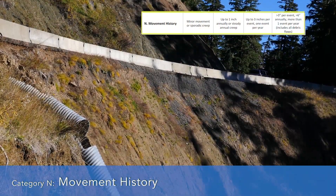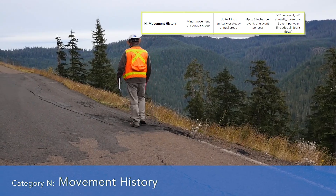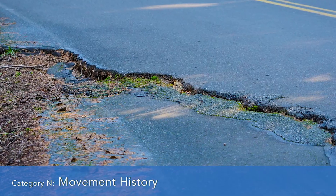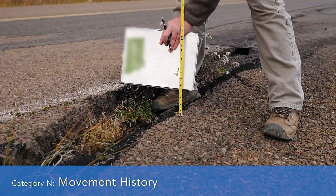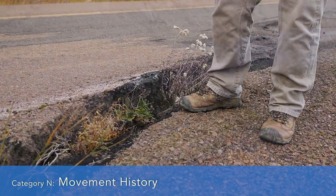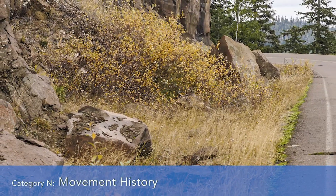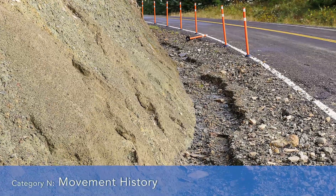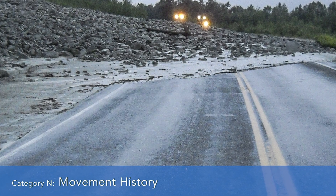Category N, movement history, is the last of our landslide-specific slope hazard rating categories. Here we evaluate the frequency and magnitude of movement on the site. This goes from three to 81, ranging from minor movement or sporadic creep all the way up to greater than three inches per event or six inches annually, or more than one event per year. For debris flows where a large quantity of material may cover the road multiple times a year or every other year, you'd rate that as an 81. Talk to maintenance personnel for additional information.